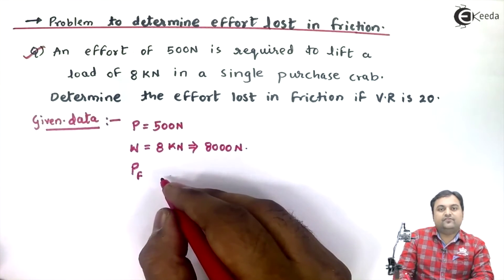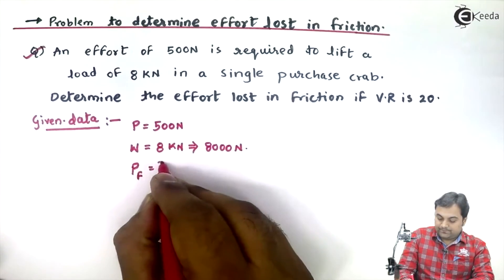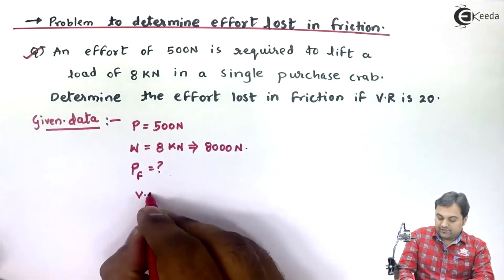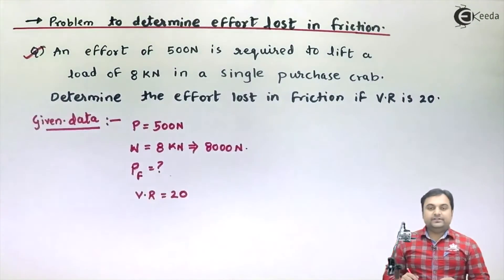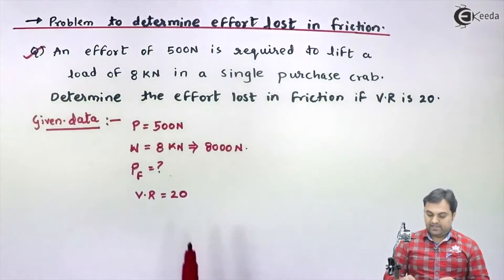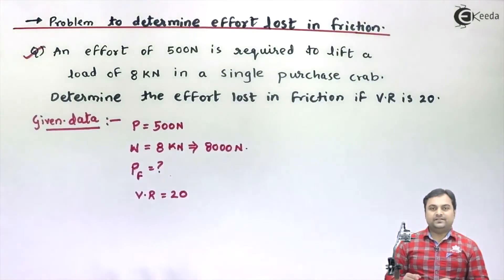VR is 20. Velocity ratio is given, it is 20. So this much is the data part. Effort lost in friction has been asked, so let us try to get this.